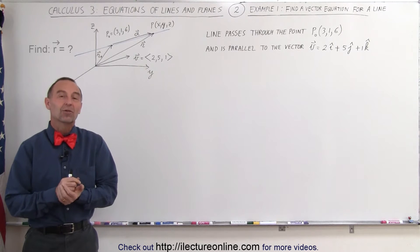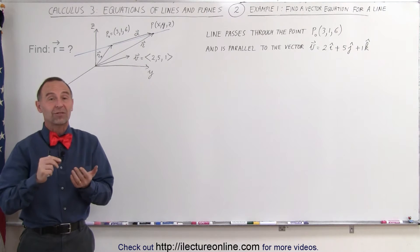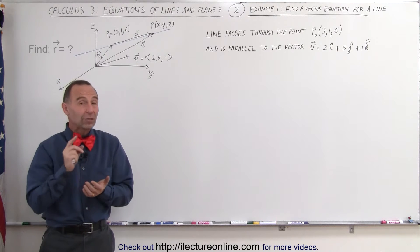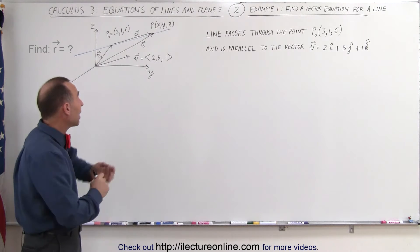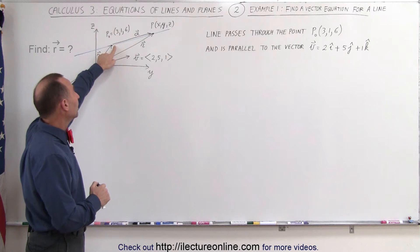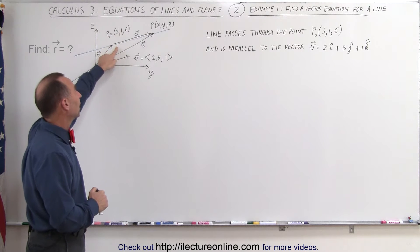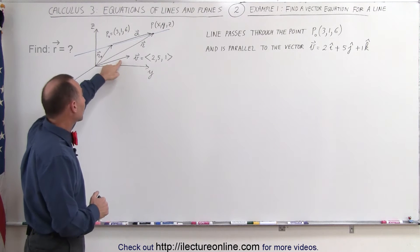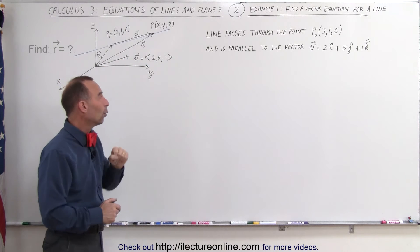Welcome to Electron Line. Sometimes we may want to express a line in space with a vector. The way to do that is as follows. Let's say we have a line in space and we know at least one point on the line — the point is (3, 1, 6) — and we know that the line is parallel to some known vector, the vector (2, 5, 1).